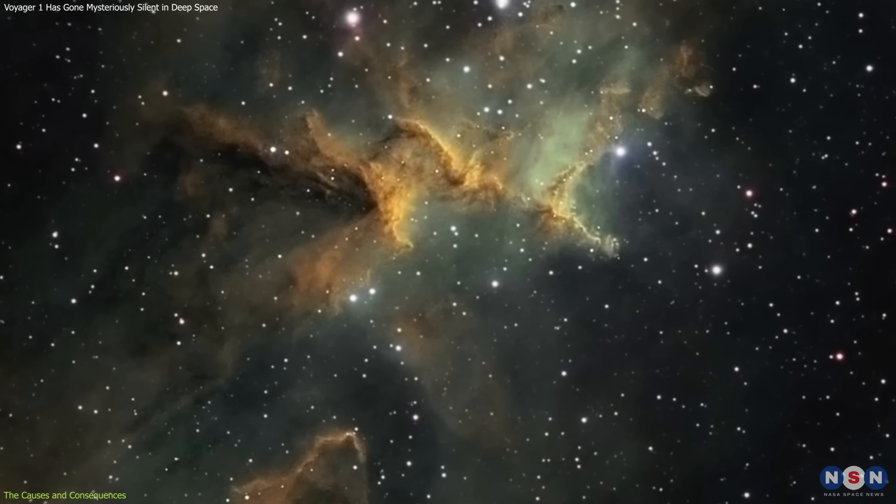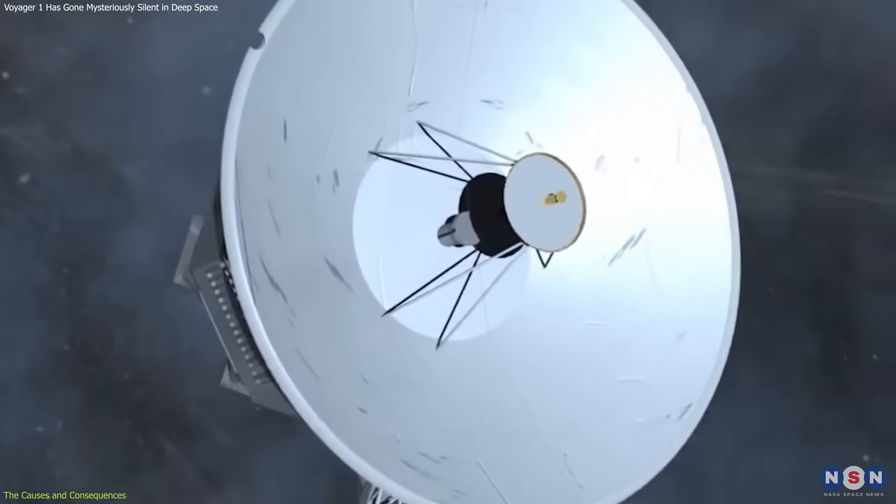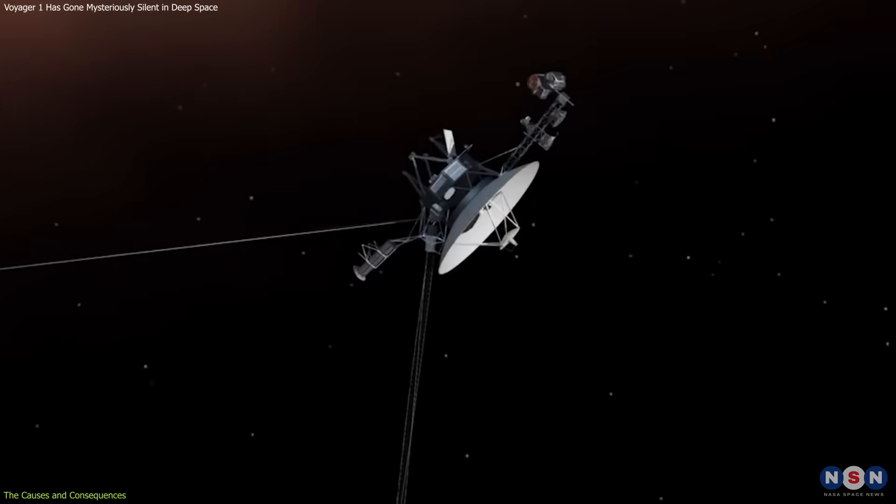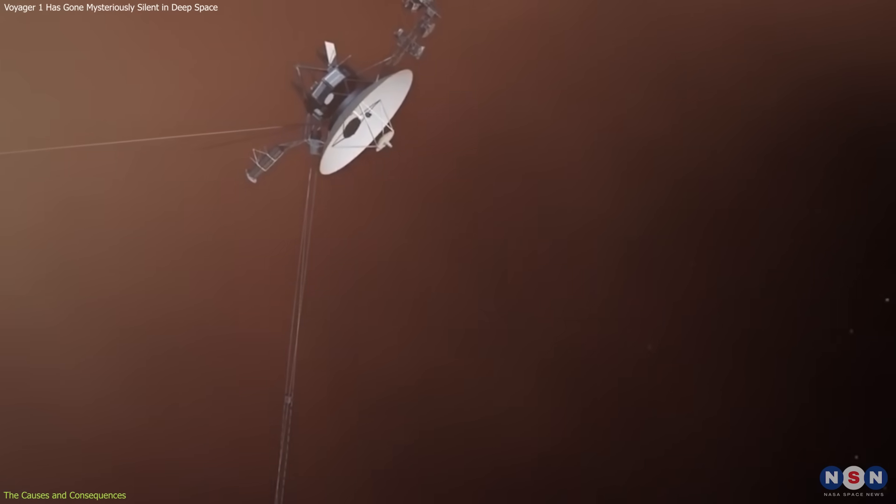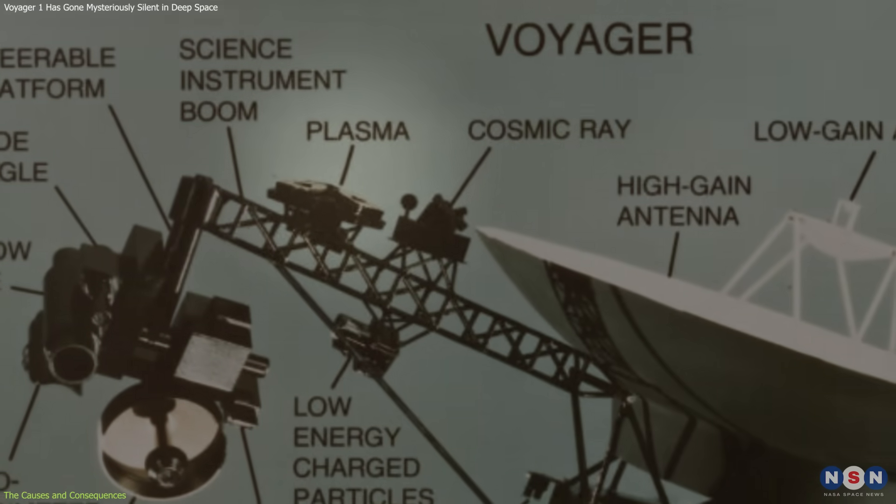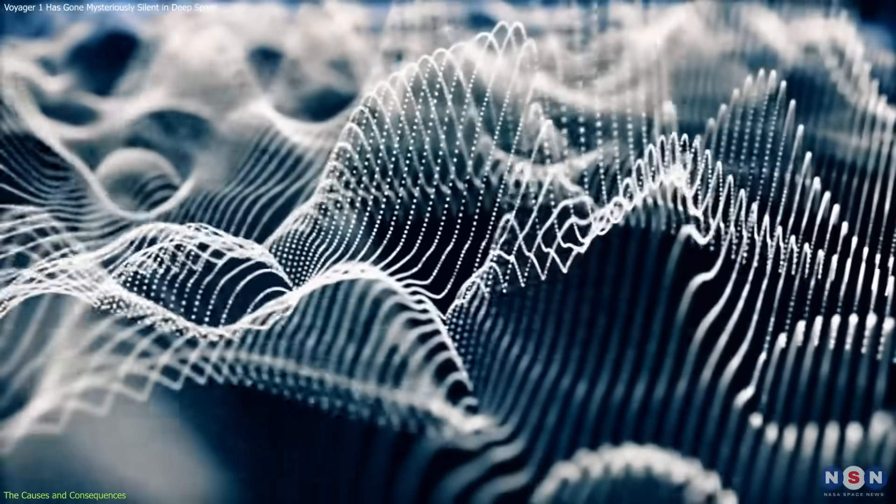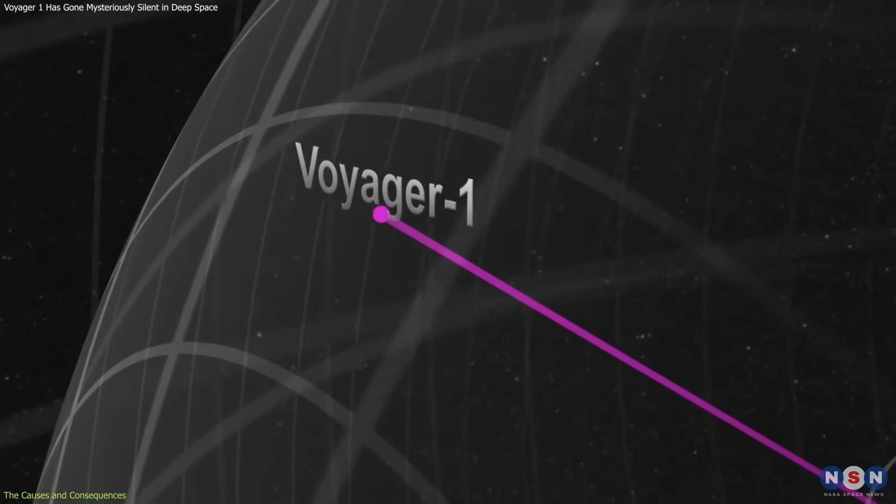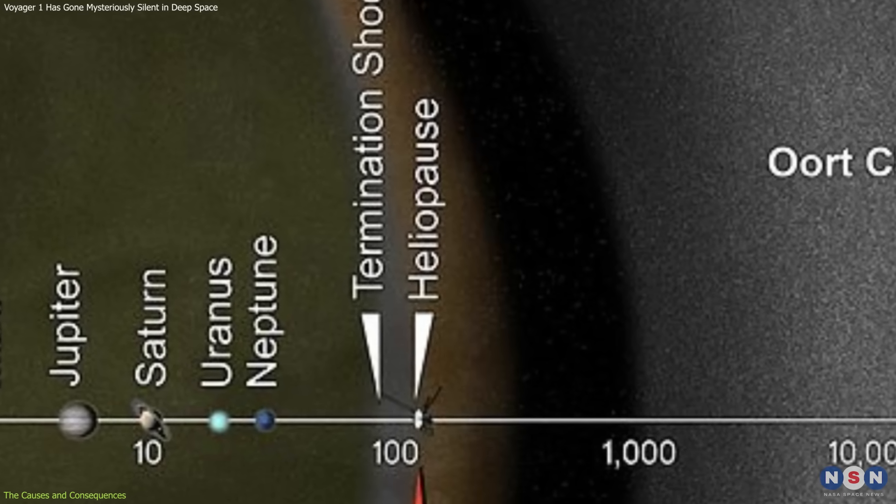These can interact with Voyager 1 and its instruments. For example, in 2012, Voyager 1 detected a sudden increase in the density of the interstellar medium, which caused its plasma wave instrument to pick up a series of waves. These waves were later interpreted as the sound of interstellar space, and they confirmed that Voyager 1 had crossed the heliopause, the boundary between the solar wind and the interstellar medium.